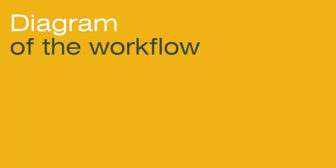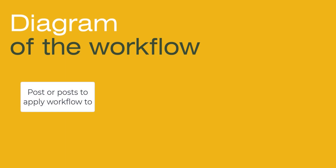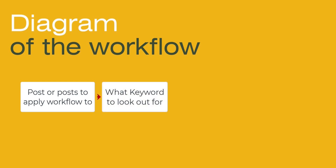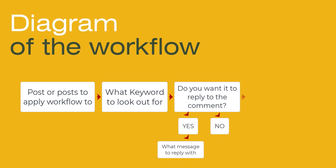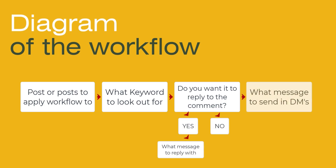Now let's talk about what you want to have queued up before you log in to set up this automation. This diagram shows the order that you'll set up the automation: first you tell it what post you want to apply this workflow to, then you tell it what keyword to look out for so ManyChat can respond to it, then you tell it if you want it to reply to that comment and if so what you want that reply to be, and then you tell it what message to send in the DMs.